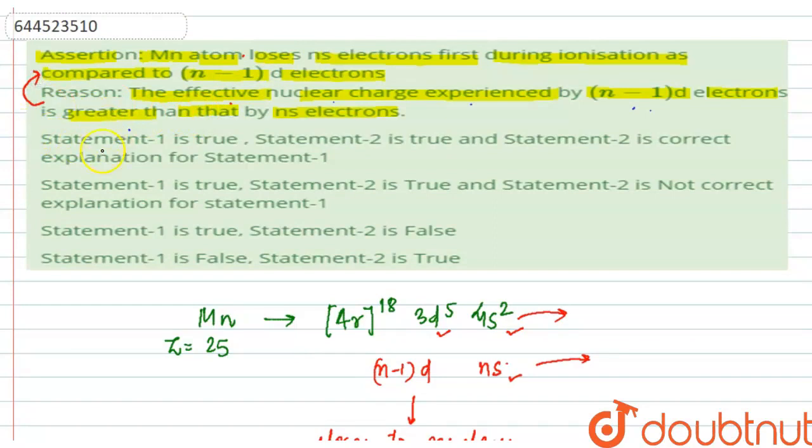Right, so the correct option will be the first one, which says that statement 1 and statement 2 are true, and statement 2 is the correct explanation of statement 1. And rest all of them are incorrect. So this is how we can try and understand this question.